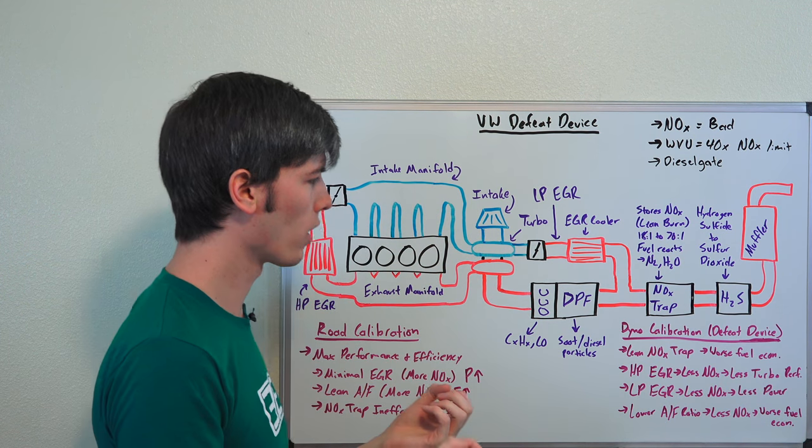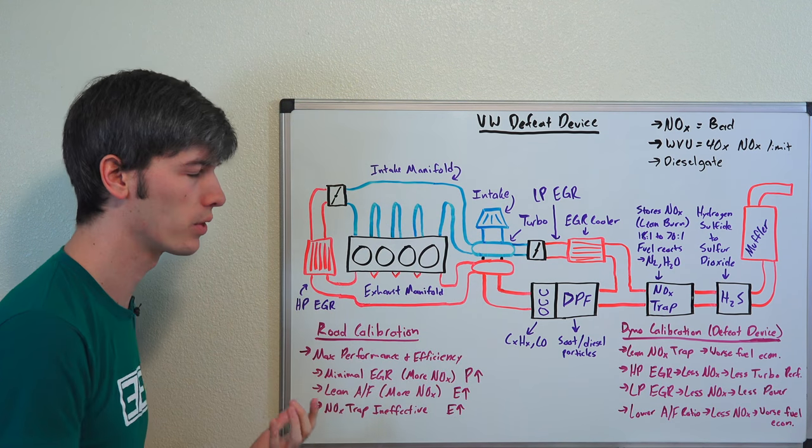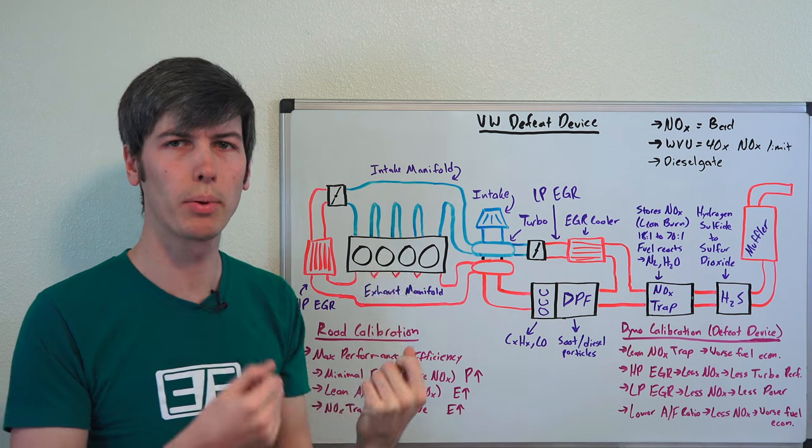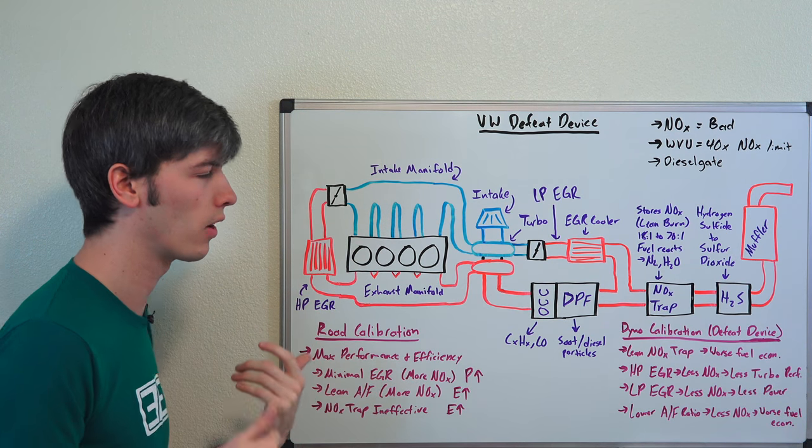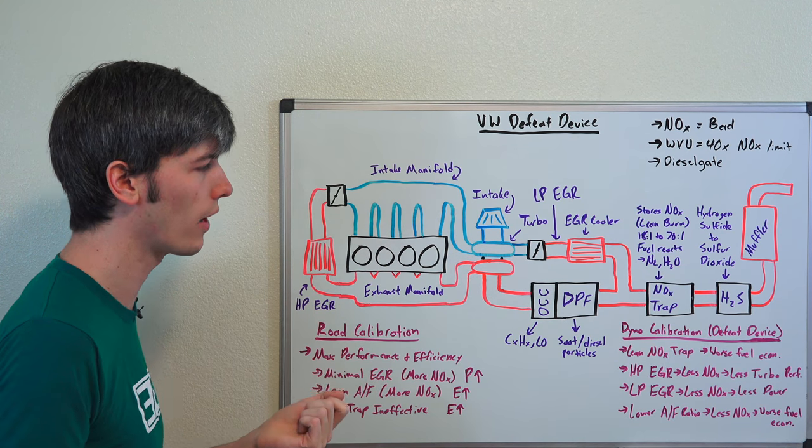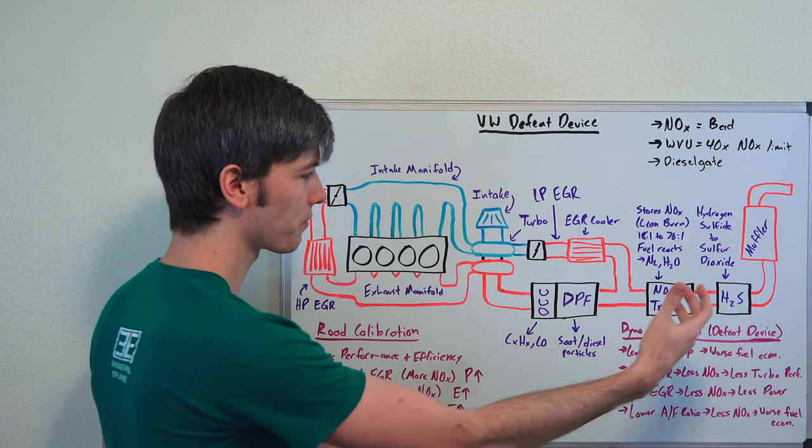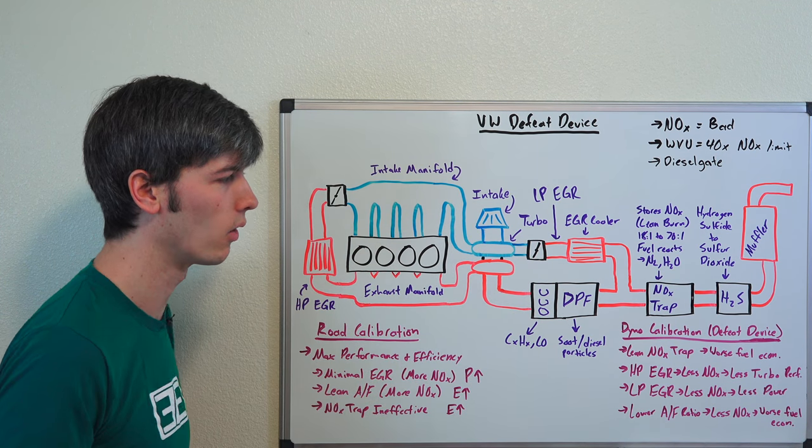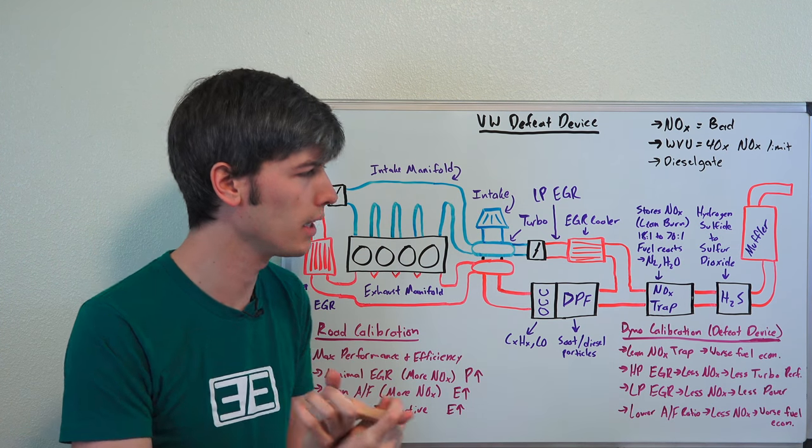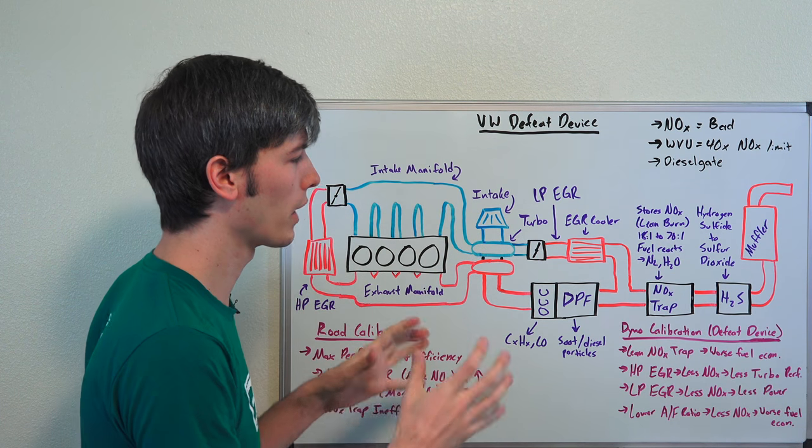So Volkswagen's cheat was to have one calibration for when the vehicle was being dyno tested and one calibration for when the vehicle is driving on the road. How does it know that it's driving on the road? Because you're going to provide a steering input, so that steering input tells the car to unleash full potential because a human is actually driving this. Versus when it's sitting on a dyno just spinning the front wheels, you're not actually steering, then it knows it's being tested right now. So it's going to reduce performance but improve emissions because that will get the EPA off their back. They'll say your vehicle's super clean and we'll get away with it. So that's what their defeat device does.